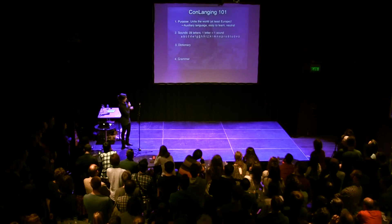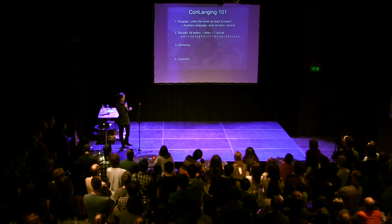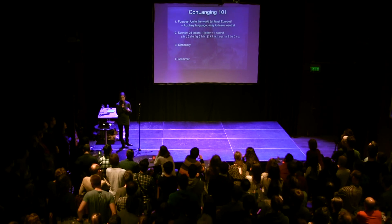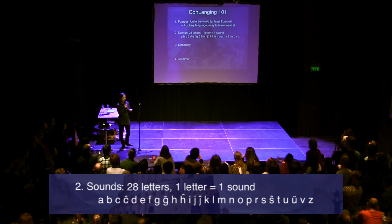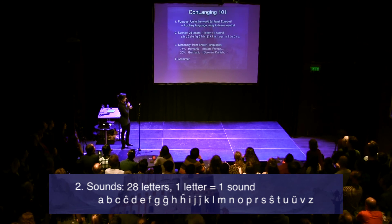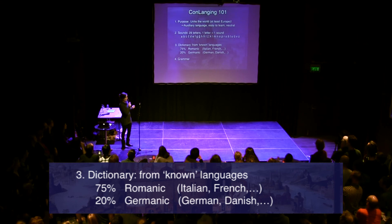So let's fill in these things for Esperanto. The purpose was to unite the world, or maybe at least Europe. Therefore we need this auxiliary language — it has to be easy to learn and it has to be neutral, otherwise it's not really uniting people. For sounds, Zamenhof took 28 letters that were very well known in Europe, with sounds that were kind of well known in Europe — Latin script, and each letter represents exactly one sound, so there's never any ambiguity. The dictionary also draws from known European languages, mostly Romanic like Italian or French, because these have lots of words that have spread through all European languages, and also Germanic. So many words in Esperanto you will already know.